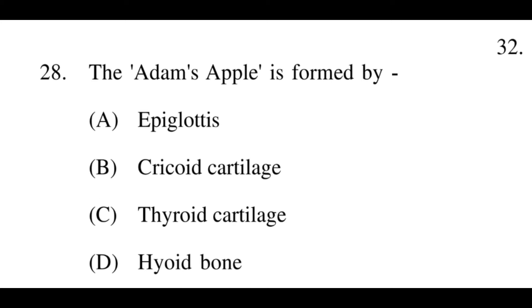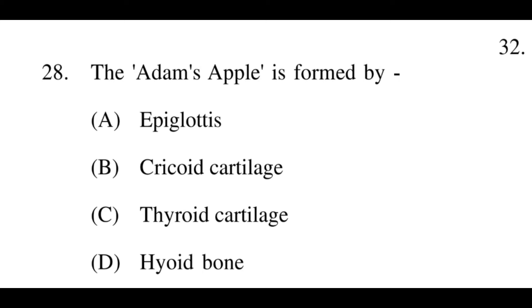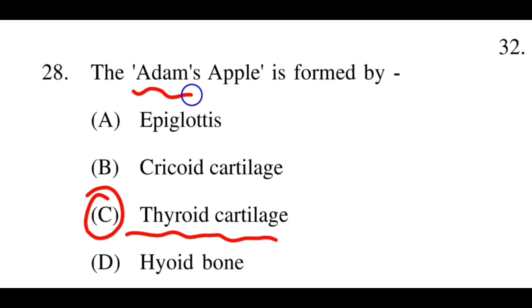Next question: The Adam's apple is formed by? Options: A: epiglottis, B: cricoid cartilage, C: thyroid cartilage, D: hyoid bone. The right option is C, thyroid cartilage. The Adam's apple, also another name for the larynx, is formed by and related to the thyroid cartilage.